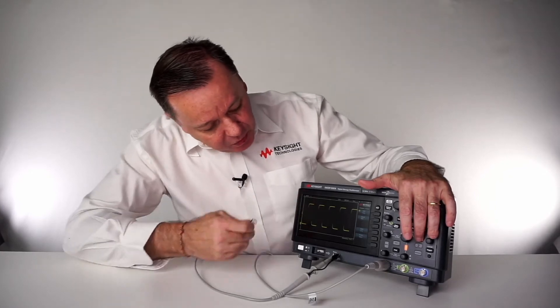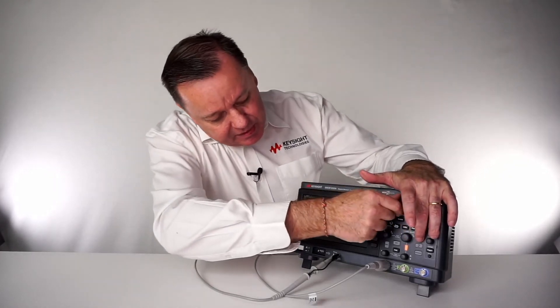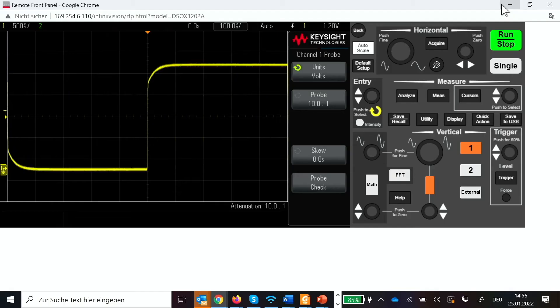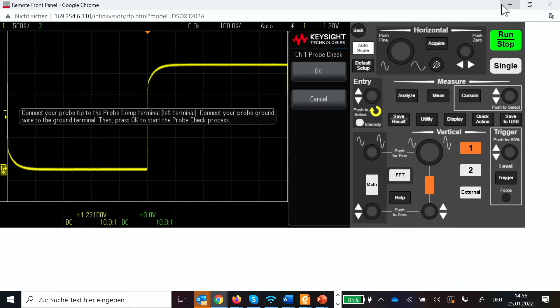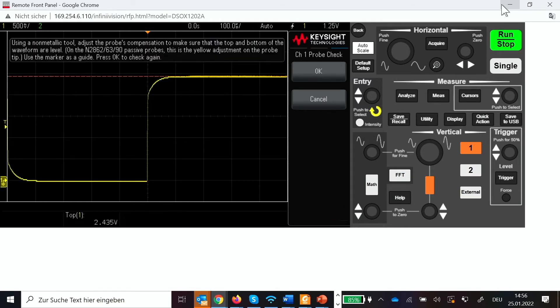We see here also it's an under-compensated signal. We can see that already in the shape. We go here to probe, probe check, okay. And now it zooms in so that we have it very well visible.